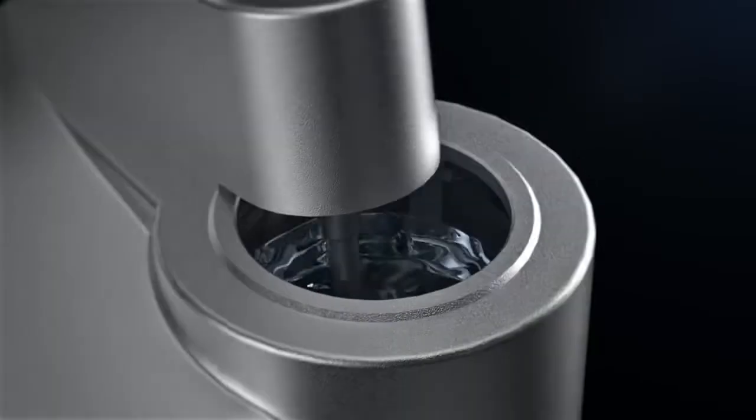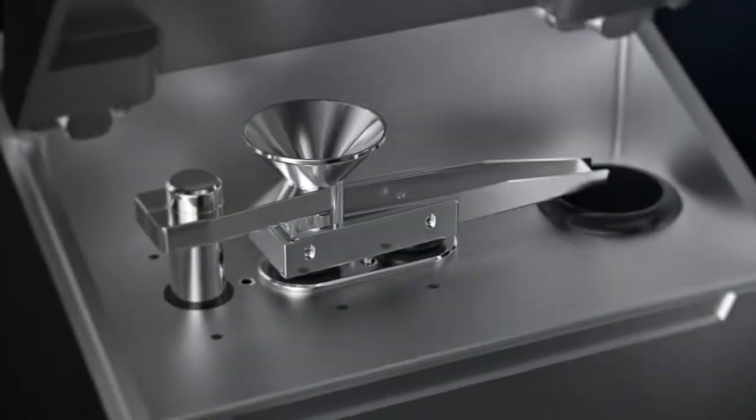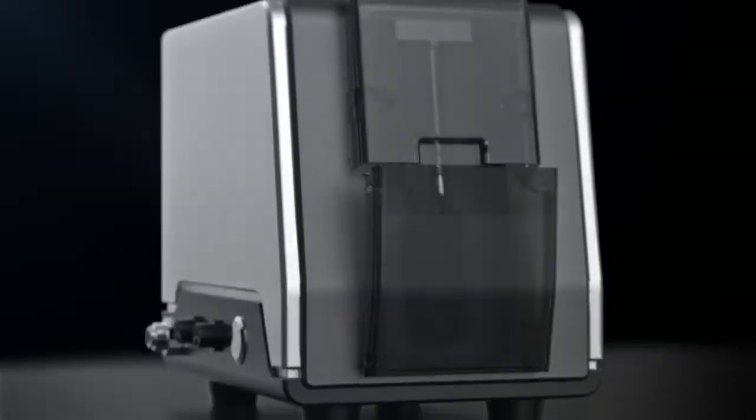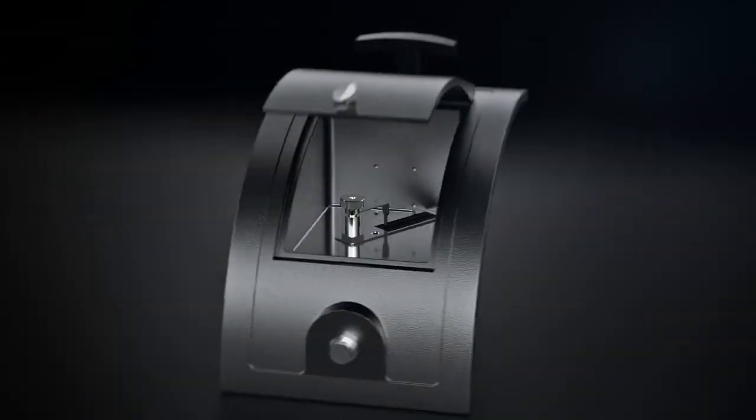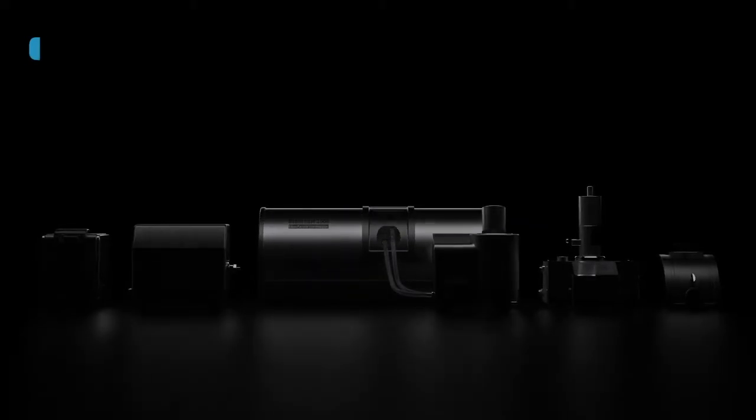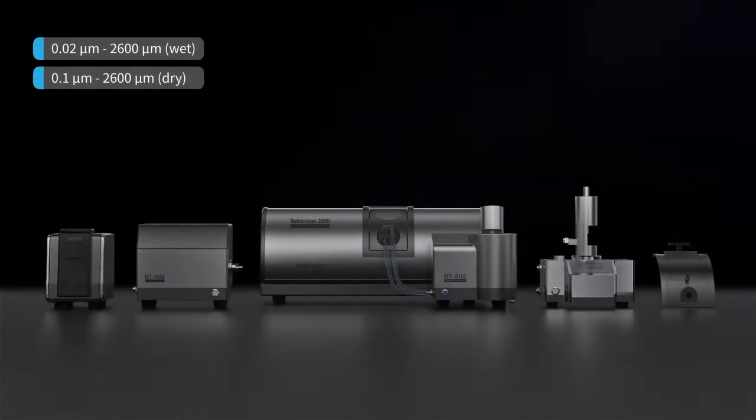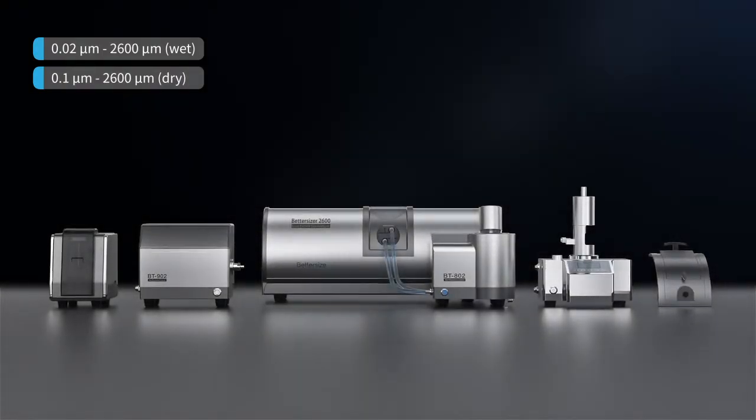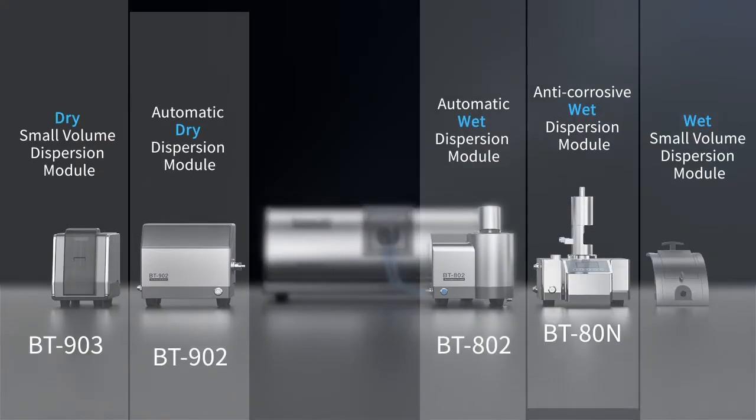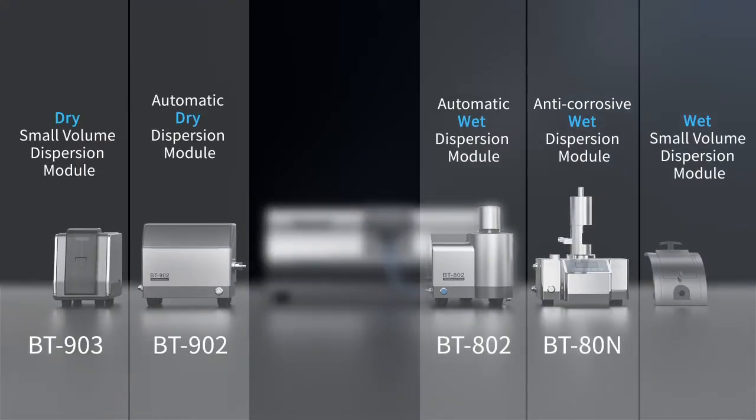The BetterSizer 2600 is a powerful and versatile particle size analyzer with a wide measurement range covering from 0.02 to 2600 micrometers. Most importantly, it has five different state-of-the-art dispersion units covering dry and wet measurements.